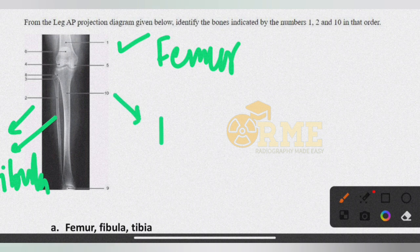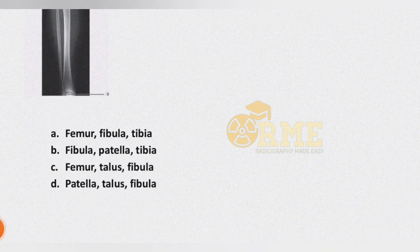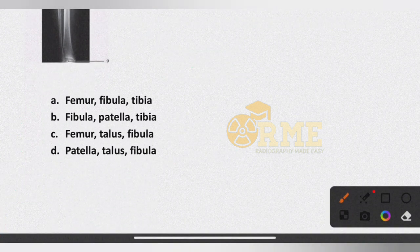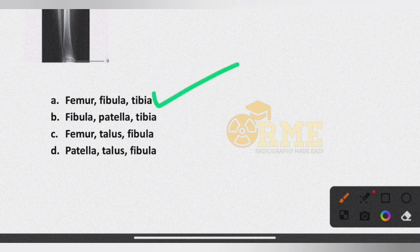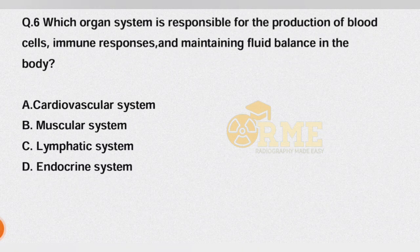The bone at number 1 is undoubtedly femur. The bone at number 2 is fibula, and number 10 is tibia. So the correct answer is option A — femur, fibula, and tibia.